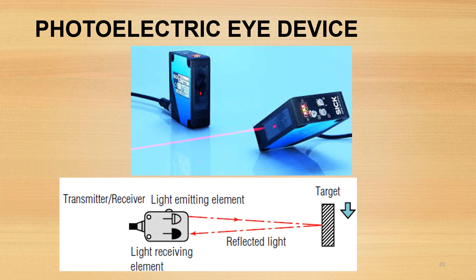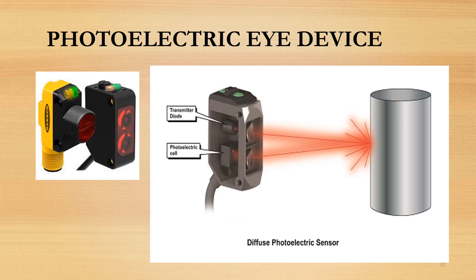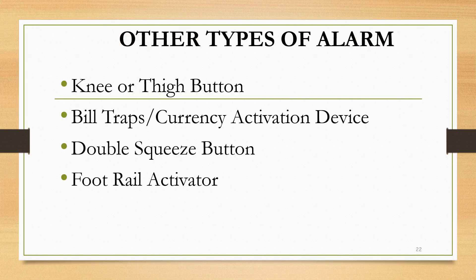It is connected by a wire to a control station, and when an intruder crosses the beam, he or she makes contact with the photoelectric coil, which activates the alarm. The photoelectric eye device emits an invisible or visible beam, and when this is disturbed or when an intruder breaks contact with the beam, it will activate the alarm.